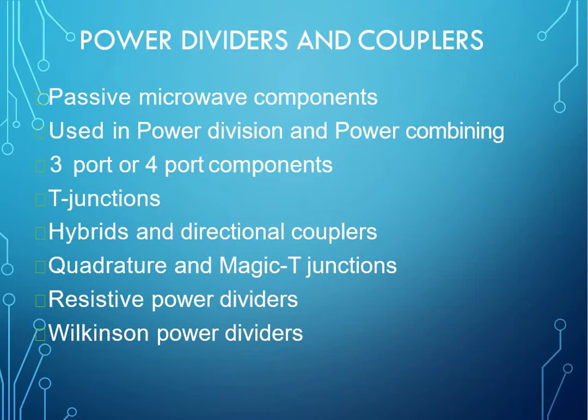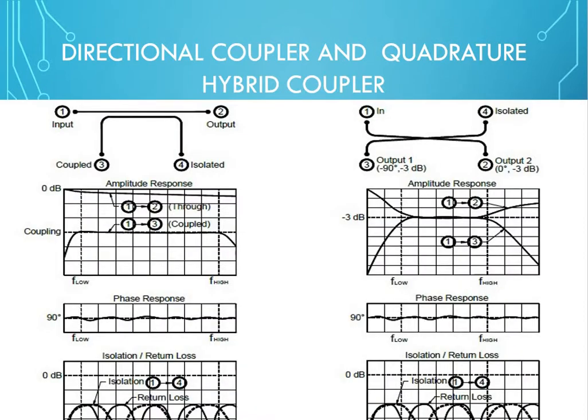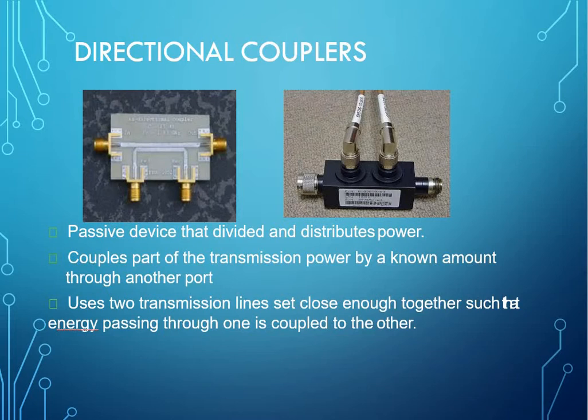Resistive power dividers and Wilkinson power dividers. Now coming to a differentiation or comparison between a directional coupler and a quadrature hybrid coupler. Both are four-port network components. The amplitude response, phase response, and isolation written laws of both components are different in their own aspects. When comparing, directional coupler gives better performance characteristics compared to hybrid coupler.